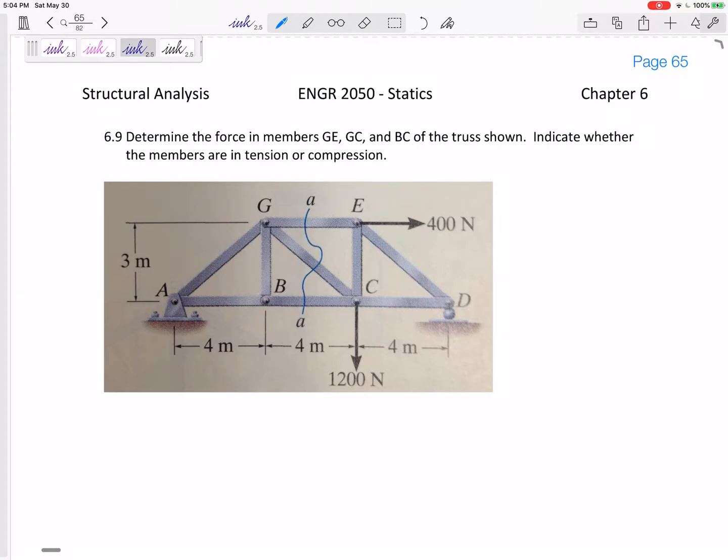If you want to find the force of members GE, GC, and BC of the truss shown, indicate whether they're in tension or compression, method of sections would be a good method.